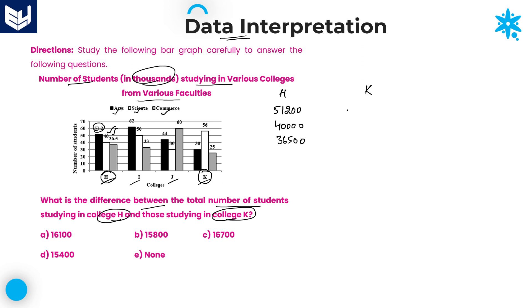Similarly, for college K: arts is 30,000; science is 56,000; and commerce is 25,000.